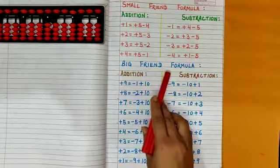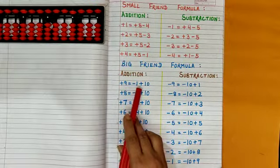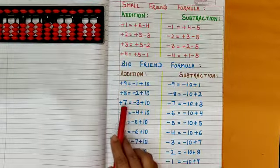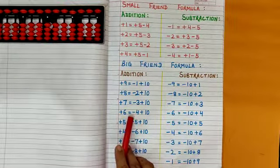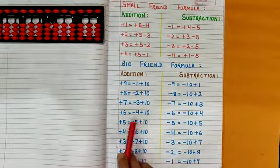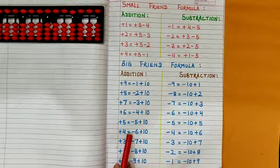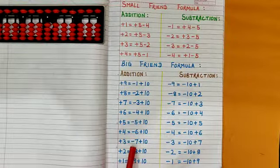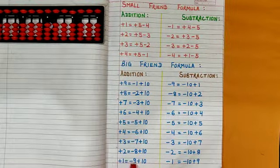Now big friend formula for addition: plus 9 is equal to minus 1 plus 10, plus 8 is equal to minus 2 plus 10, plus 7 is equal to minus 3 plus 10, plus 6 is equal to minus 4 plus 10, plus 5 is equal to minus 5 plus 10, plus 4 is equal to minus 6 plus 10, plus 3 is equal to minus 7 plus 10, plus 2 is equal to minus 8 plus 10, plus 1 is equal to minus 9 plus 10.